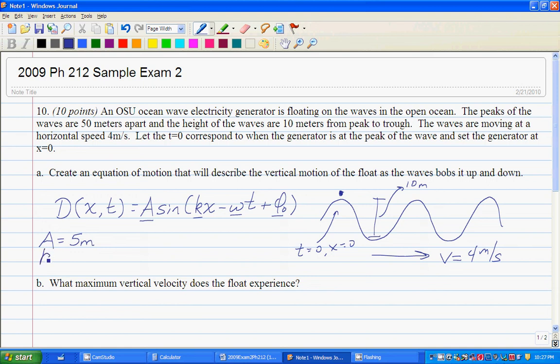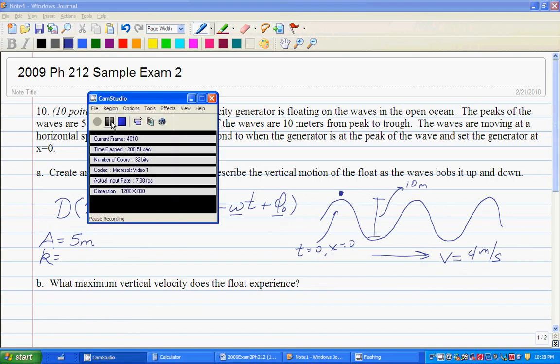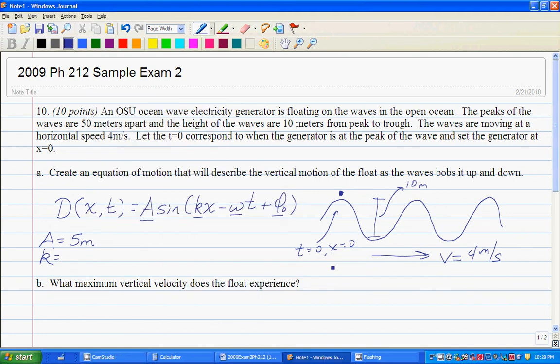Remember that the amplitude is from the midpoint to either the upper peak or the lower peak. We'll get to k in a second. Let's do omega first. Omega is equal to 2 pi over the period.